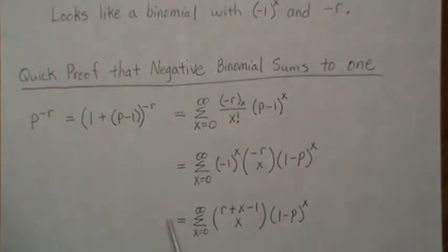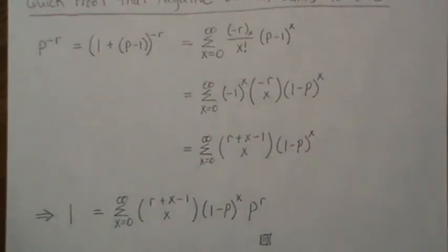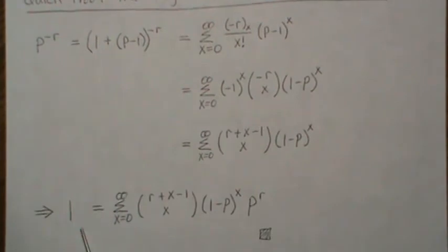Now we have p to the minus r is equal to this. So if we divide both sides by p raised to the minus r and then of course take it to the numerator, then we get one over here, and we get this piece.